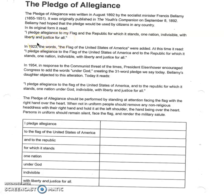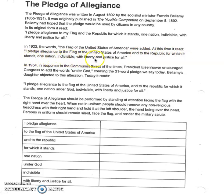Over the next 50 or so years, we've seen the Pledge of Allegiance change and evolve over time. In 1923, the words 'the flag of the United States of America' were added. At this time it read: 'I pledge allegiance to the flag of the United States of America, and to the republic for which it stands, one nation indivisible, with liberty and justice for all.'